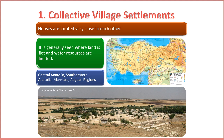5. Cultural traditions. Collective village settlements may have distinct cultural traditions shared among community members, often revolving around agriculture, religious practices, and community celebrations. 6. Economic interdependence. Residents may be economically interdependent, engaging in joint activities such as cooperative farming or collective production efforts. 7. Preservation of local identity. The collective nature of these settlements often contributes to the preservation of local identity and traditional ways of life. Collective village settlements play a crucial role in shaping the rural landscape and exemplify the importance of community cooperation and shared resources in rural living.